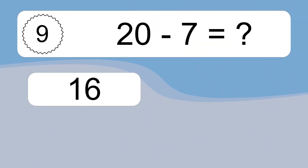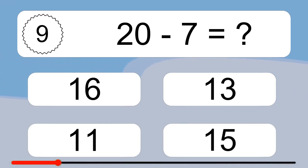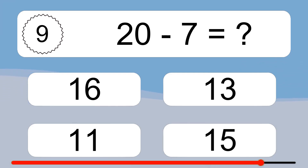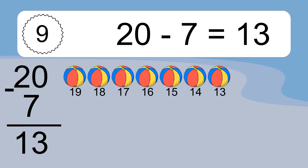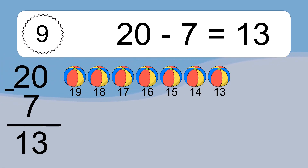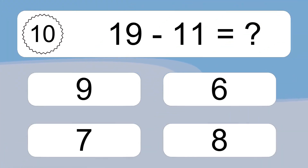20 minus 7 equals what? 20 minus 7 equals 13. Let's count it: 19, 18, 17, 16, 15, 14, 13.